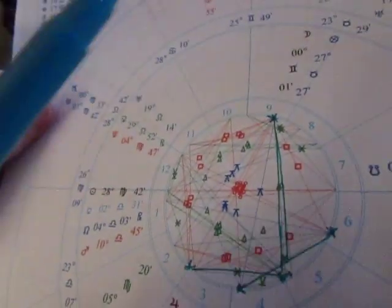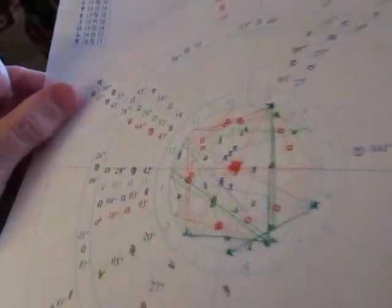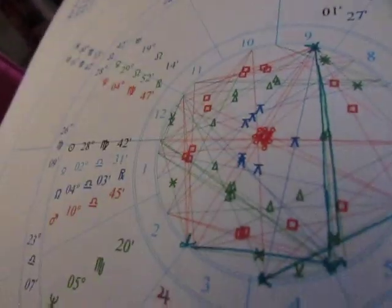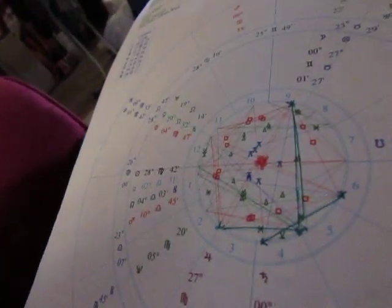What we're looking at in the center is your birth chart. This is right here, that is it. And then on the outside wheel, this is the current movements of the planets.